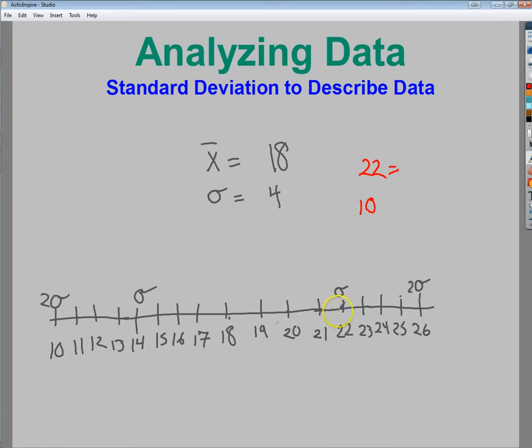Well, 22 is one standard deviation above the mean. 10, however, is two standard deviations below the mean.